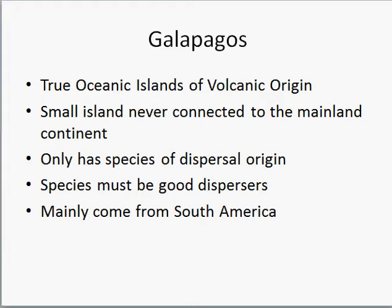Any species found on those islands has some sort of dispersal origin, so the species must have been good dispersers and able to make it across a large expansive ocean to get to the Galapagos. The species in the Galapagos, as opposed to Hawaii, mainly come from South America, as the ocean currents and wind directions favor species dispersing from South America to the Galapagos.